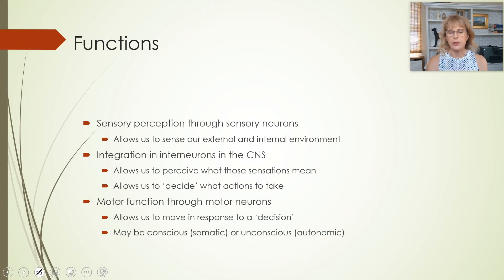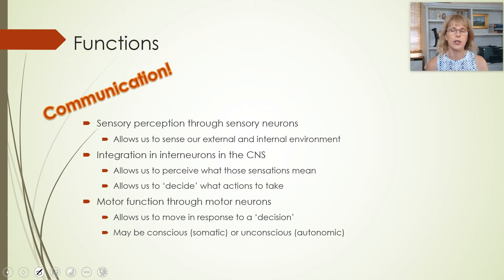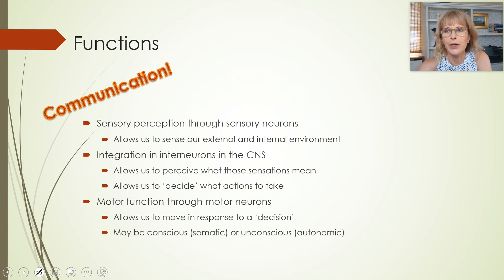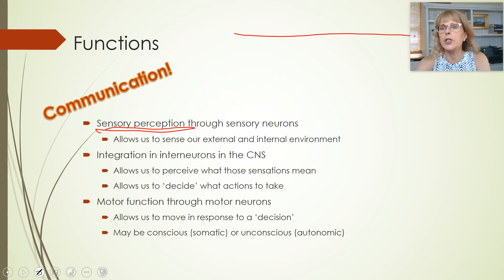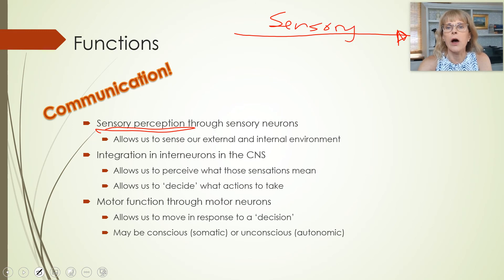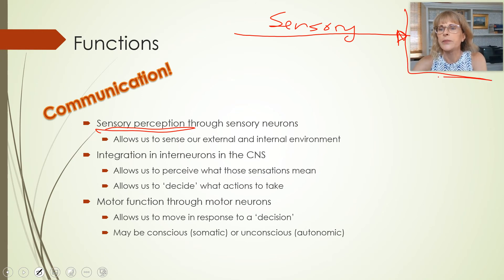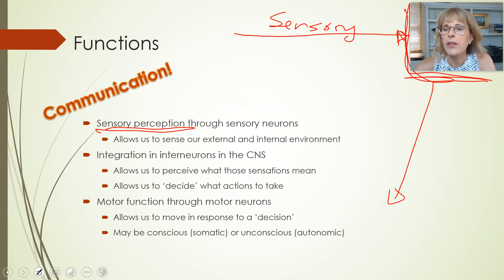As we're talking about the nervous system, the primary function of the nervous system is communication. The human body has two communication channels: the endocrine system and the nervous system. There are three general functions of the nervous system: sensory perception — that is information going to my brain; integration — what my brain is busy doing; and motor — commands going out.